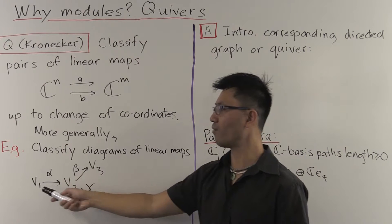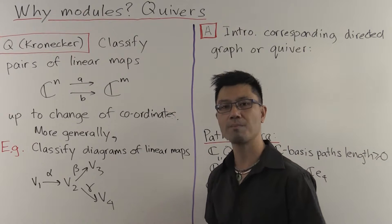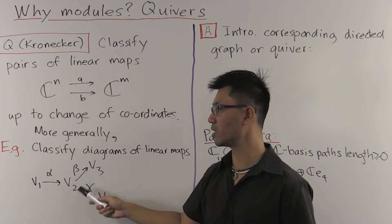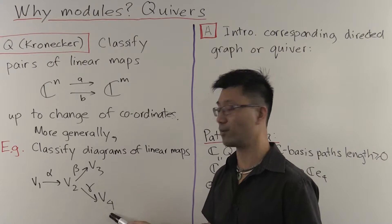So here we have four vector spaces, V1, V2, V3, and V4. And three linear maps, alpha from V1 to V2, beta from V2 to V3, and gamma from V2 to V4.